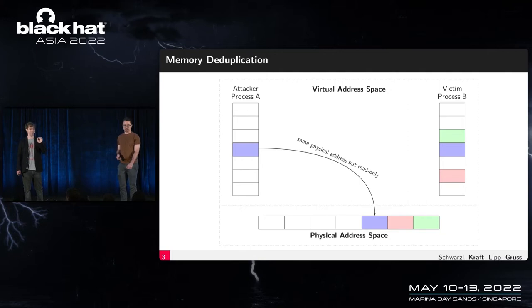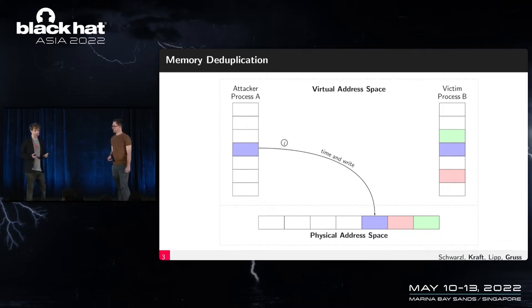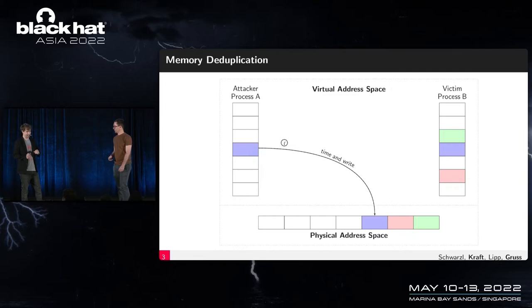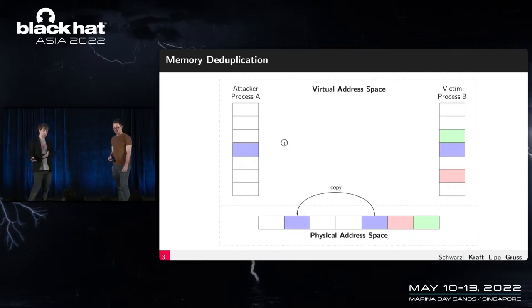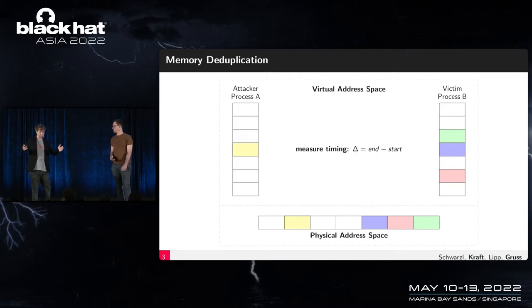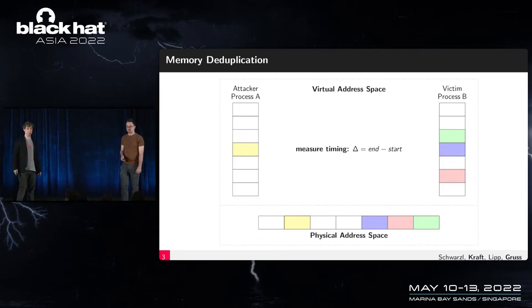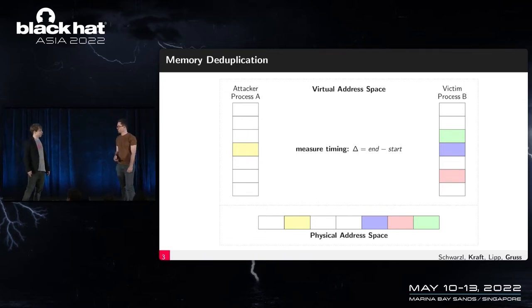This gives us a perfect oracle to tell whether the victim has a page with exactly that content somewhere in memory. We can exploit the copy-on-write semantics: we time how long it takes to write to a page. If it was deduplicated, the OS has to copy it back, making it a slow write access. We measure the delta between end and start for the write access, and this tells us whether the page was copy-on-write or not.